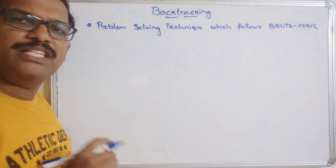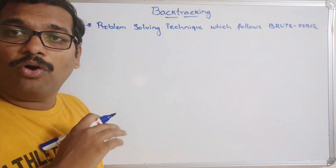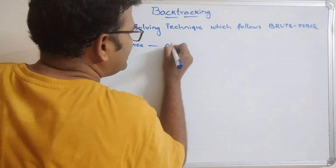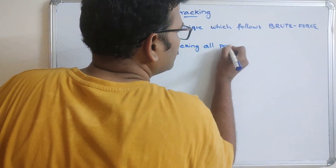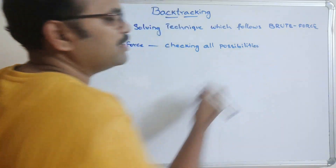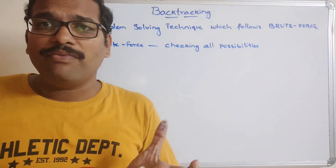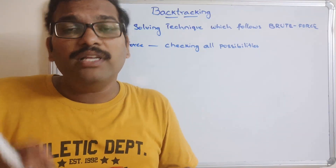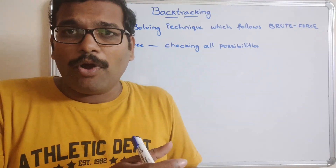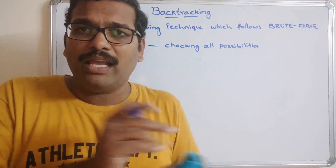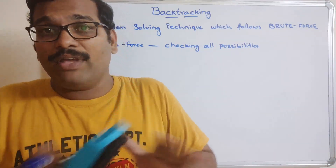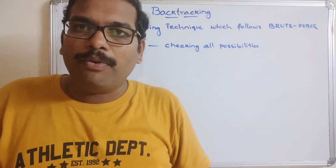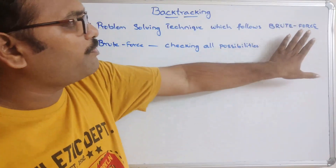The brute force approach means checking all possibilities to get the solution. For example, imagine you are having one lock and five keys. You don't know the exact key which opens the lock, so you try each and every key. At some point the lock will be opened by one key among those five — that is brute force: without any prior knowledge, just applying all possibilities. Backtracking works with the help of brute force but with some additional technique.